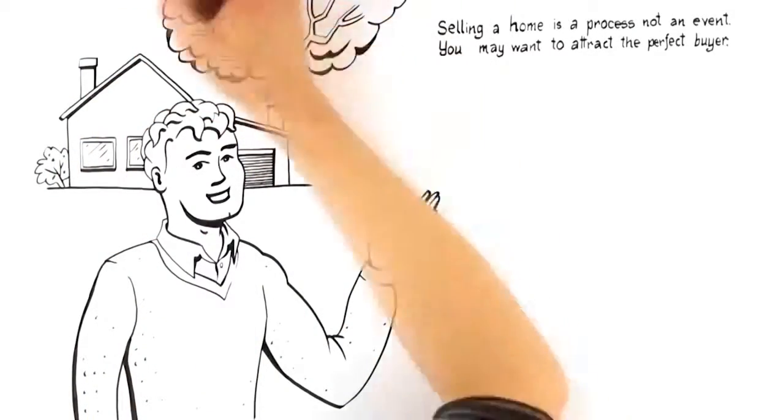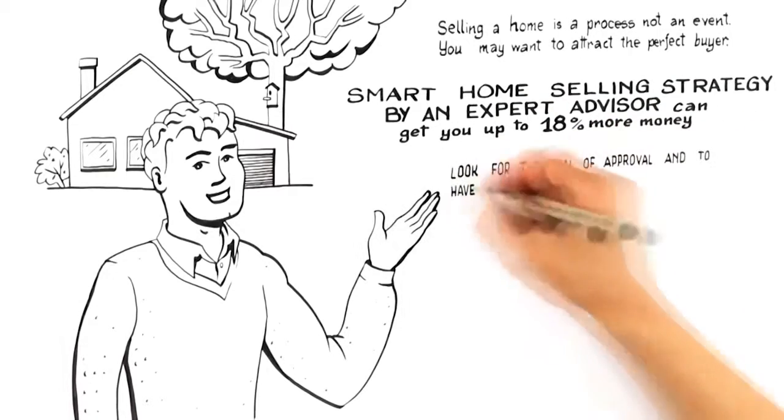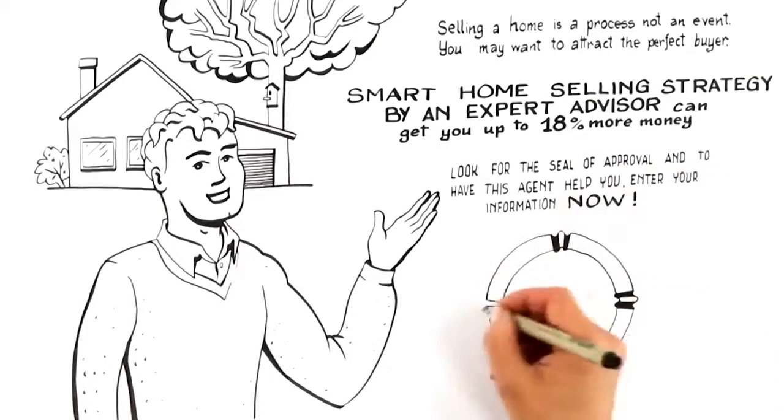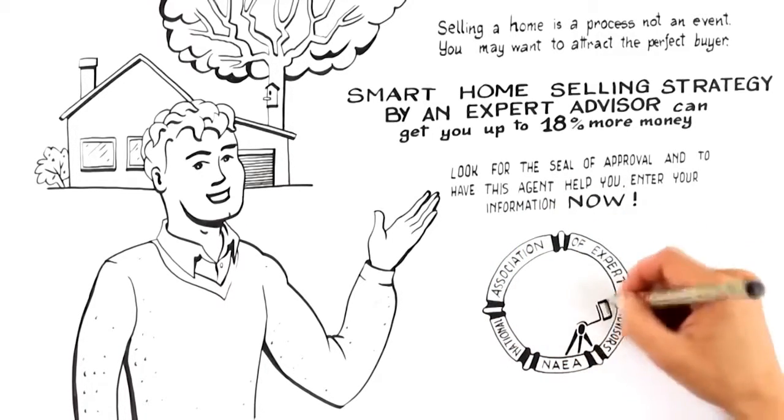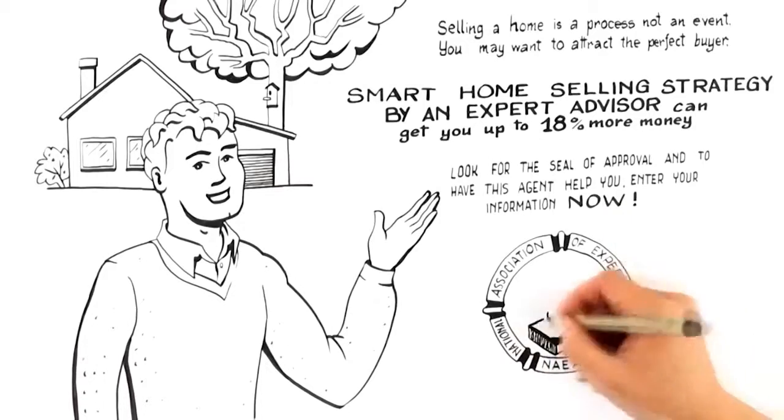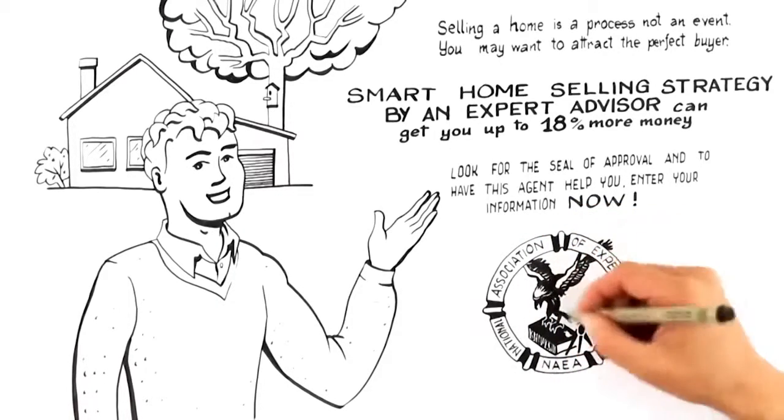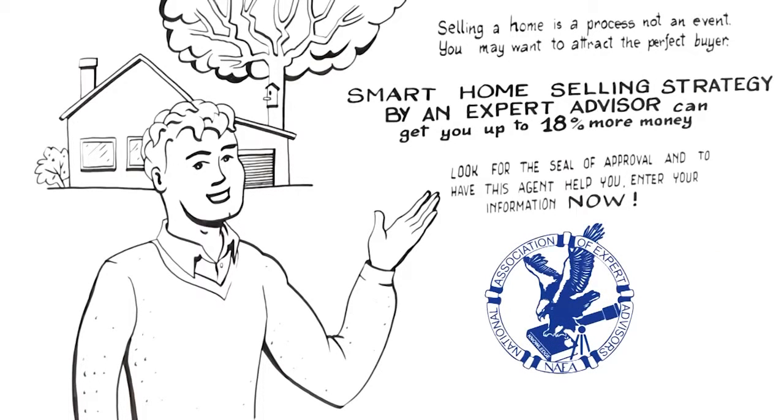So if you're selling, the next logical step is to request a free, no commitment, smart home selling strategy from an expert advisor. Expert advisors are members of the National Association of Expert Advisors, who are trained and certified to prepare a smart home selling strategy that can sell your home faster and for up to 18% more money than the traditional real estate agent. Look for the seal of approval, and to have this agent help you, call the number now.